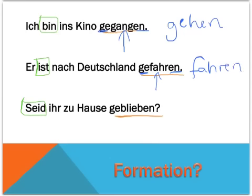And in the third example: Seid ihr zu Hause geblieben? — Did you stay home? Again, we have our GE, our EN, and it's an irregular stem, changing from bleib to blieb. It comes from the verb bleiben, to stay or remain.